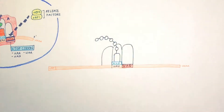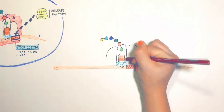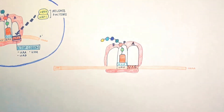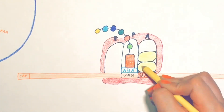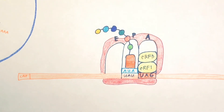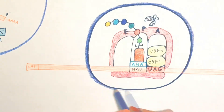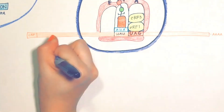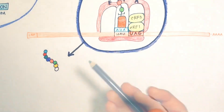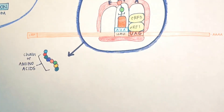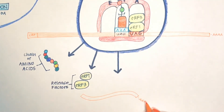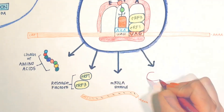eRF3 is also required for termination. After eRF1 and eRF3 have bound, the bond between the polypeptide and the tRNA is cleaved. In the final step of translation termination, the chain of amino acids and the tRNA are released, as well as the release factors eRF1 and eRF3, the mRNA, and the ribosomal subunits disassemble. Now the ribosome is ready for a new round of translation.